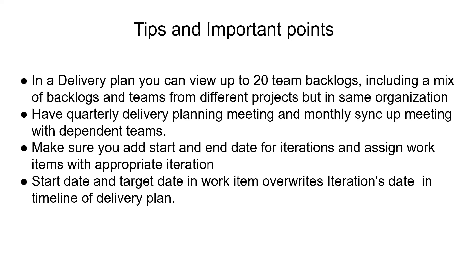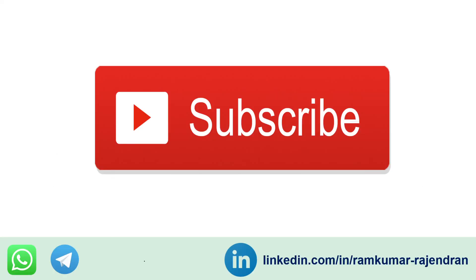Now let's talk about tips and important points. You can view only 20 team backlogs in a particular delivery plan — they can be from different projects but must be within the same organization. You can have quarterly delivery plans for features to see which teams have dependencies and plan accordingly. You can hold monthly sync-up meetings to discuss alignment changes. You need to specify start date and end date for each iteration and assign the iteration path to work items. When start date and target date are defined for a work item, they always override the iteration dates. That's it for this video — please hit the bell icon for notifications, and I'll provide WhatsApp and Telegram channel URLs in the description. Thank you, bye.